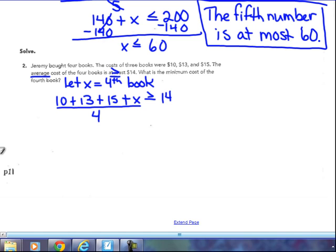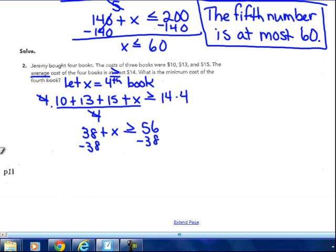So again, it's a grouping division, grouping symbol, the fraction line. That's like this numerator being in parentheses and dividing, so the opposite would be to do the multiplying first. And I get when I sum the three books that I already know about, I have $38 plus my fourth book, has to be greater than or equal to, now 14 times 4 is 56. Subtracting 38 on both sides, I get x is greater than or equal to 18.